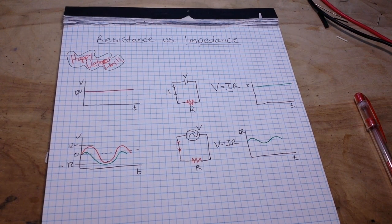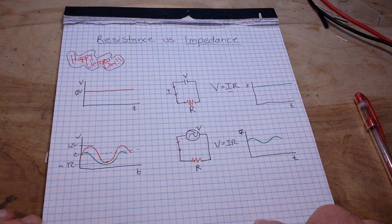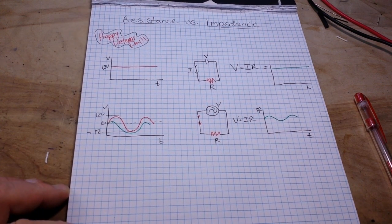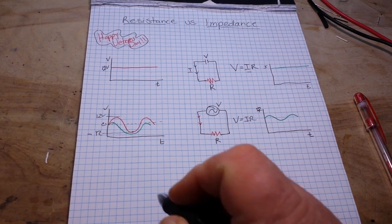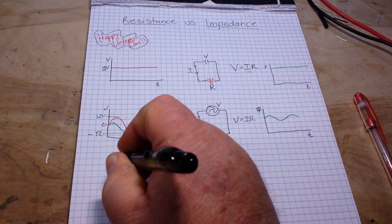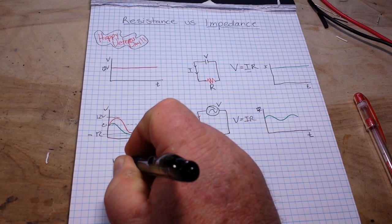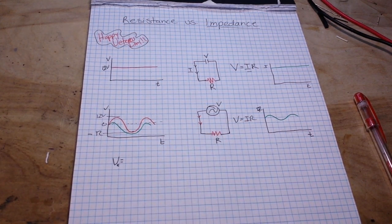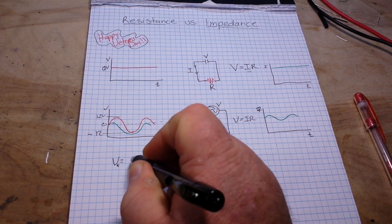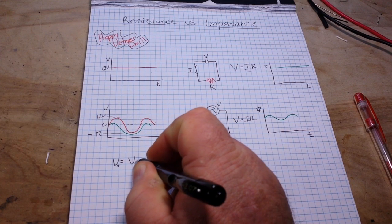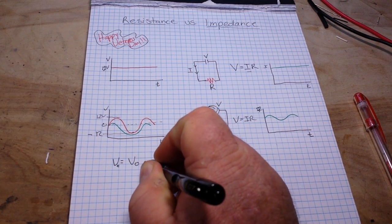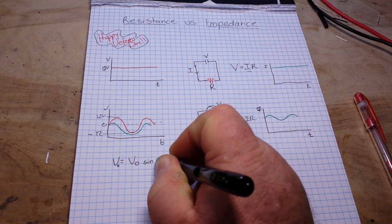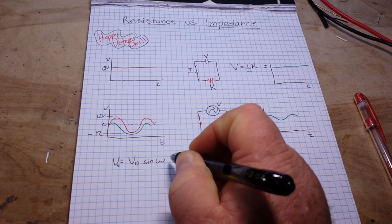The next question then becomes how do we figure out what the voltage and the current are over time? Well, there's some formulas of course. So the first one for voltage, the voltage at time T is equal to V0 times sine omega T.